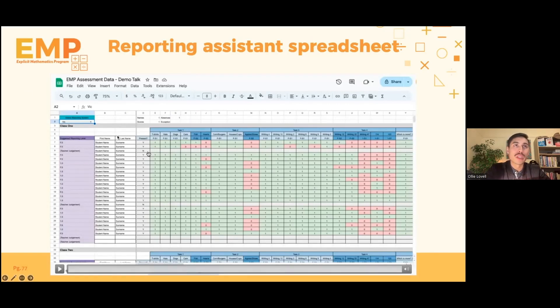Now, this takes the guesswork out of reporting for teachers, automatically shows them a suggested reporting level, and it's going to make that reporting approach much quicker and much more efficient, and also much more reliable and much more consistent across your school. There's also a space for teacher judgment, for example, if a student has been absent.